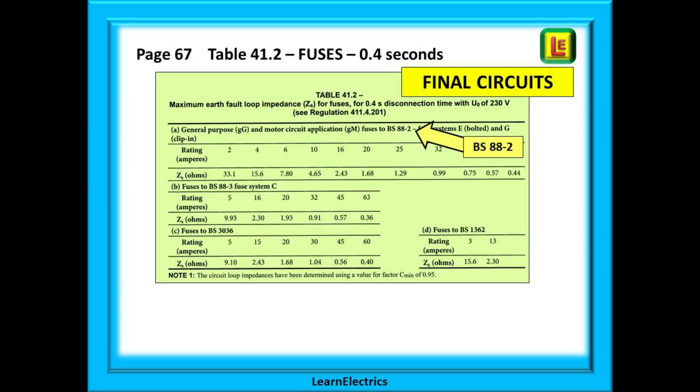Looking at the ZS tables now and answering the question, what is the maximum ZS impedance permitted, we will begin with table 41.2 on page 67, which is for fuses only. It tells us it is for 0.4 second circuits, which implies final circuits only, and you must remember this. There are four types of fuses shown. BS88-2, BS88-3, and notice here that the fuse sizes shown do not exceed 63 amps.